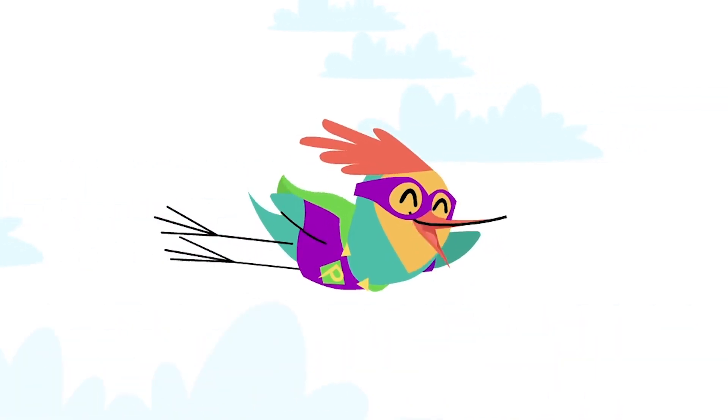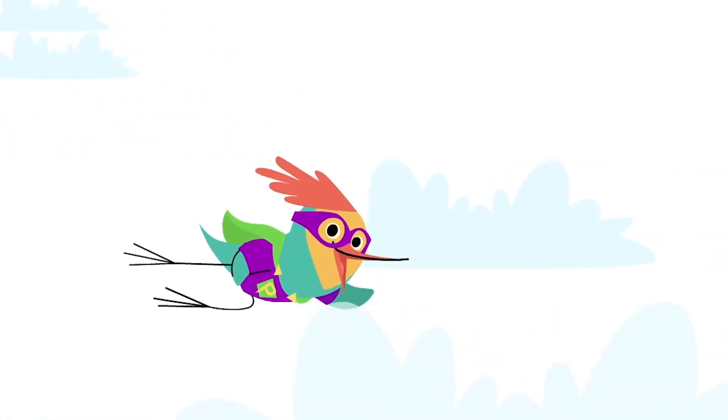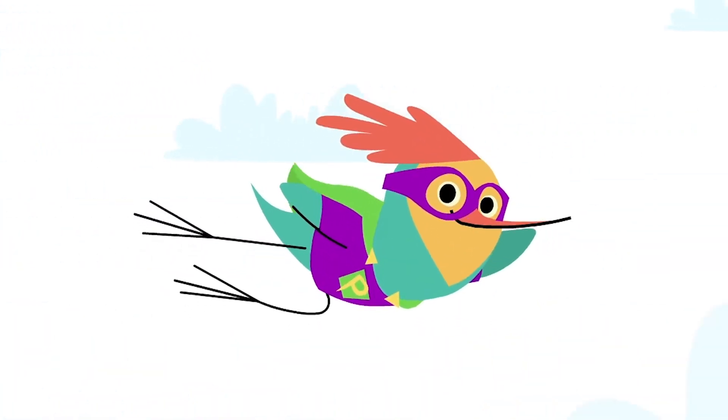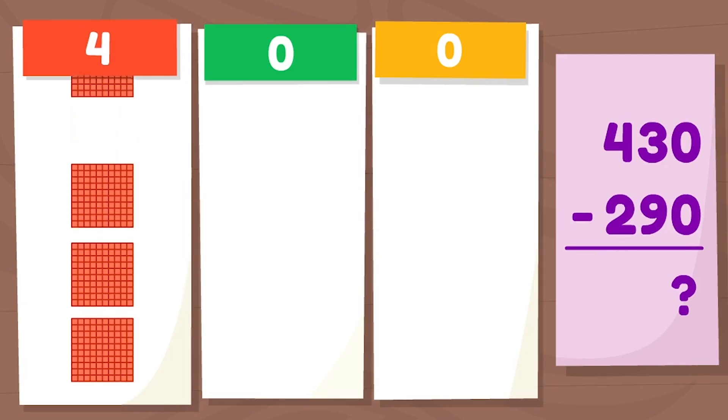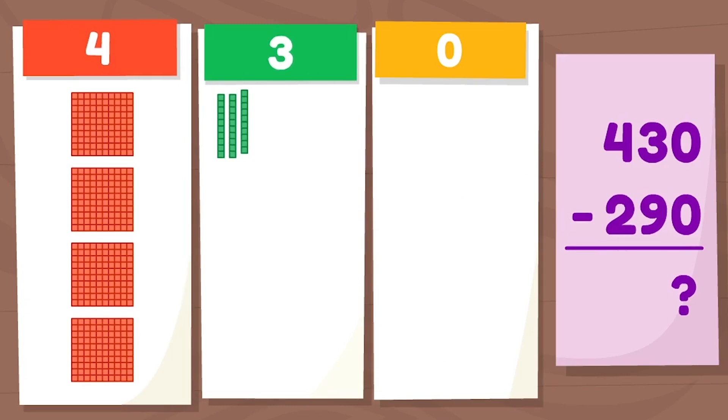I'm on a mission. Let's subtract some big numbers. What is 430 minus 290? We have 430, which is the same as 400 and three tens. Now we want to take away 290. First, let's take away the tens.